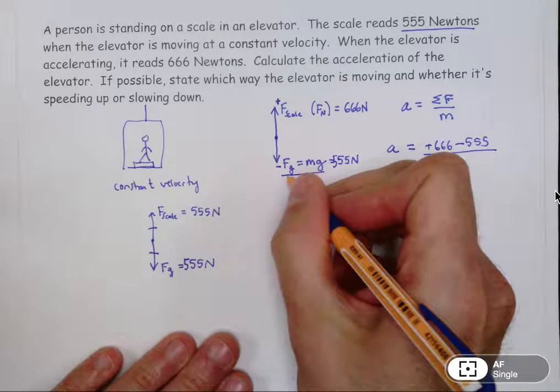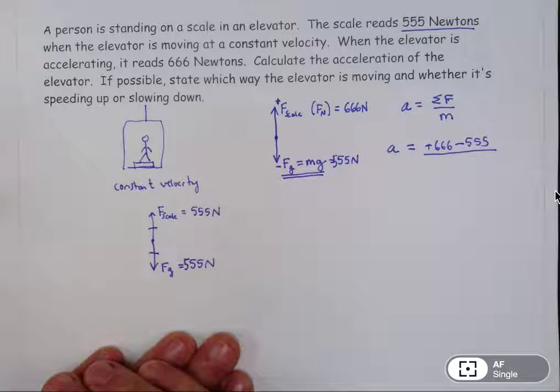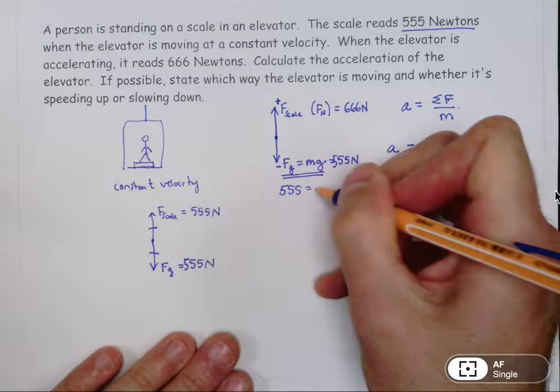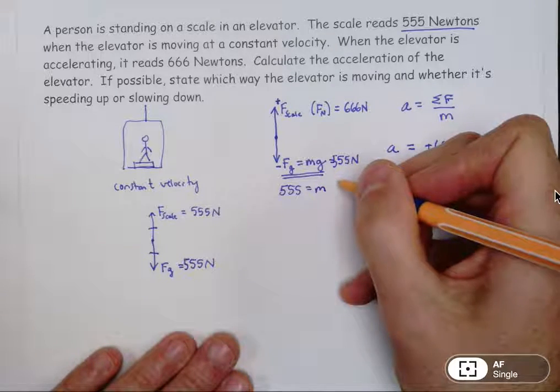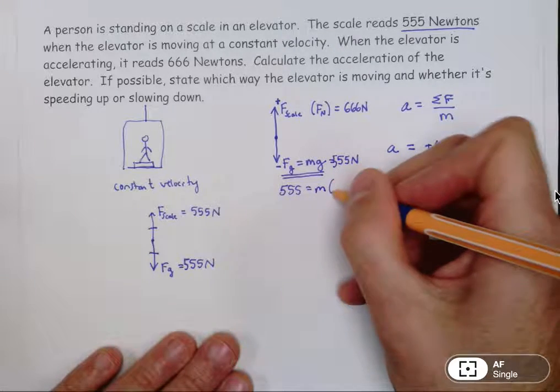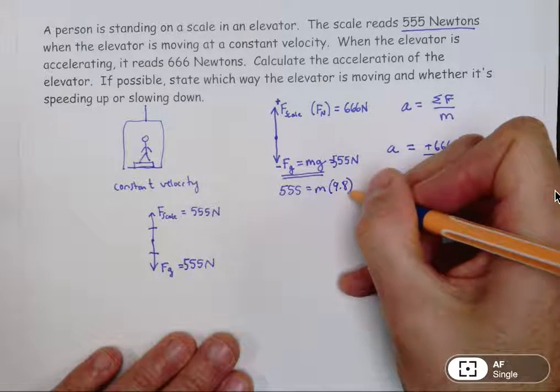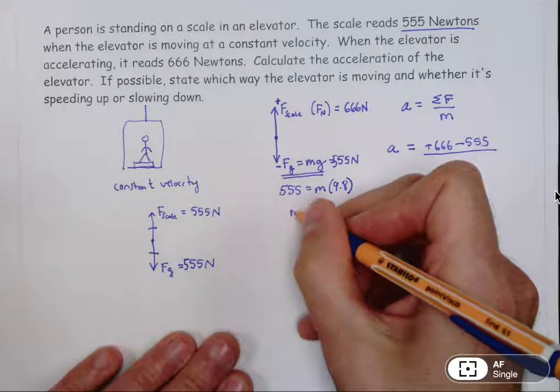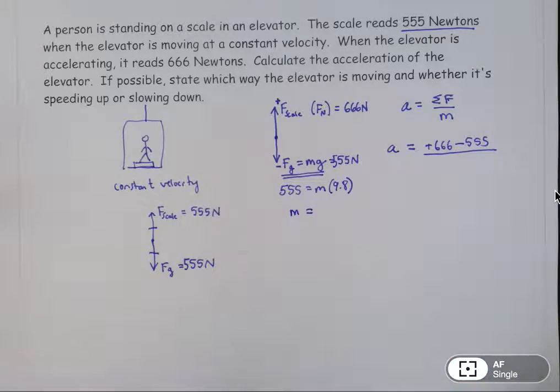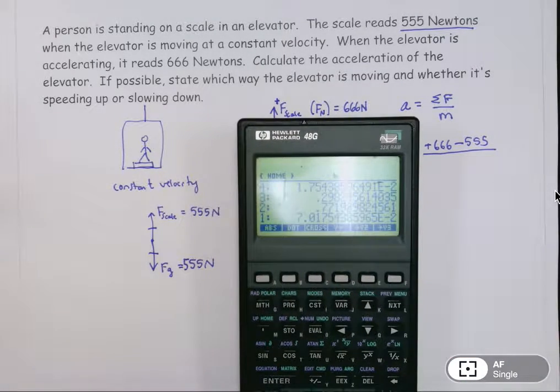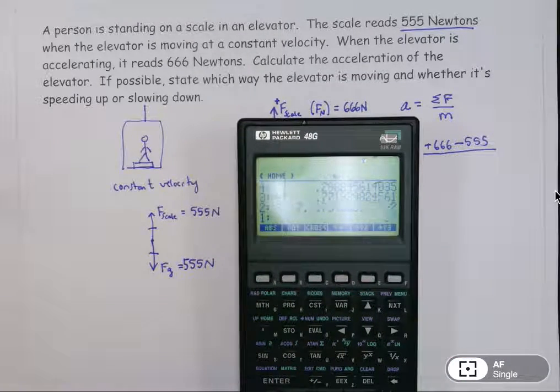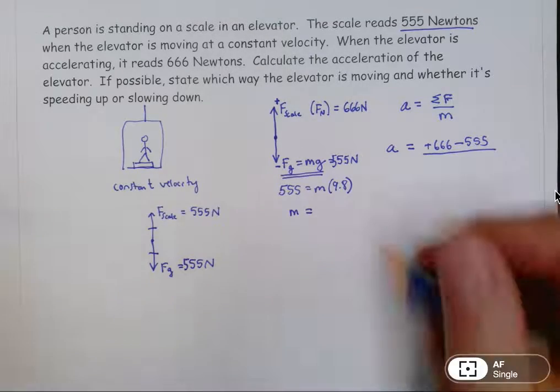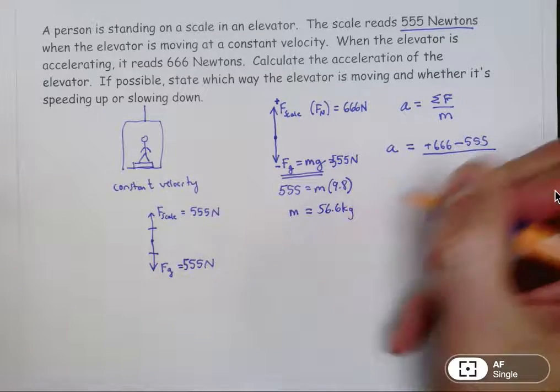Fg equals mg. We know that the Fg is 555. And g, which is the Earth's gravitational field strength, is 9.8. The Earth pulls with a force of 9.8 newtons on every kilogram of mass. And so that gives us a value of m. I'm just going to have to use my calculator here and take 555 and divide by 9.8. And that gives me 56.6. So the mass is 56.6 kilograms.